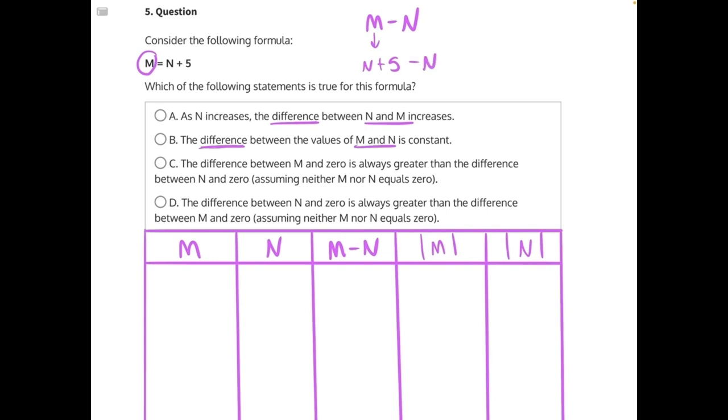We can rearrange the expression to have our like terms next to each other. N minus N would just give us 0 plus 5, which is 5. This result is a constant, meaning that the relationship within this difference is also constant, making B our correct answer.